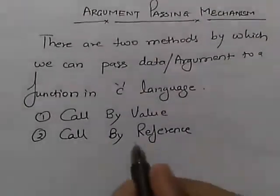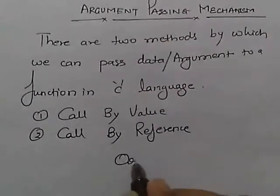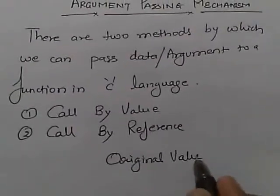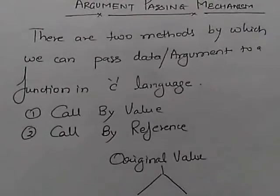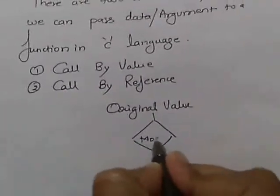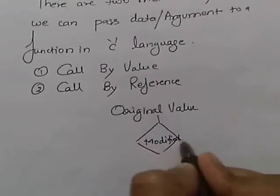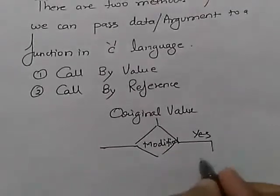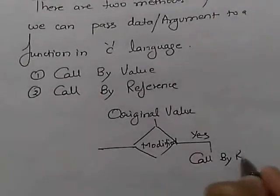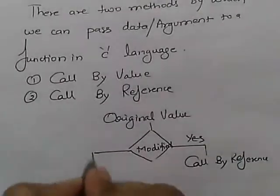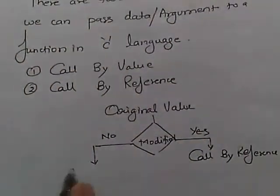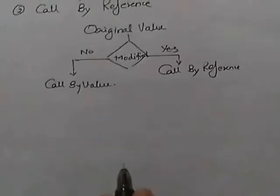Now we have an original value. If this original value is modified, if it is yes, then it is known as call by reference.